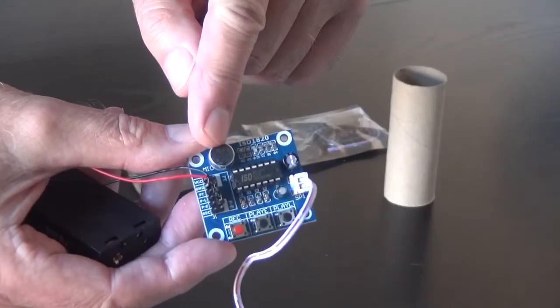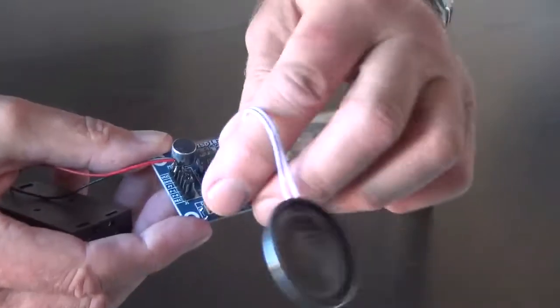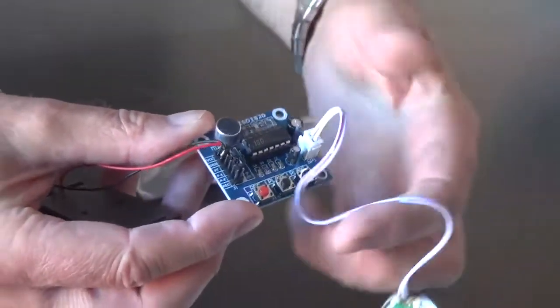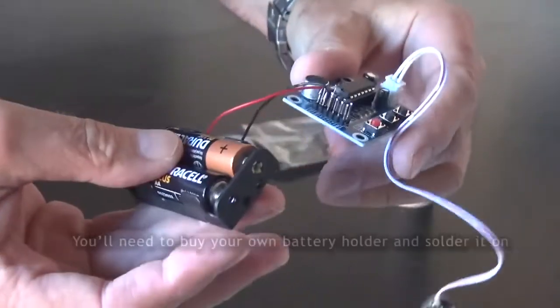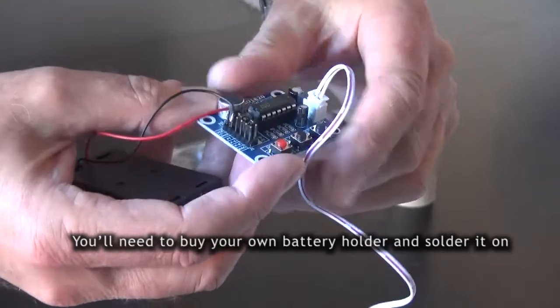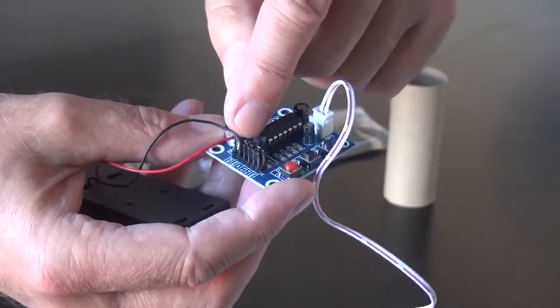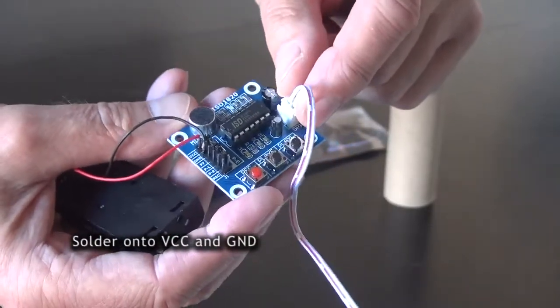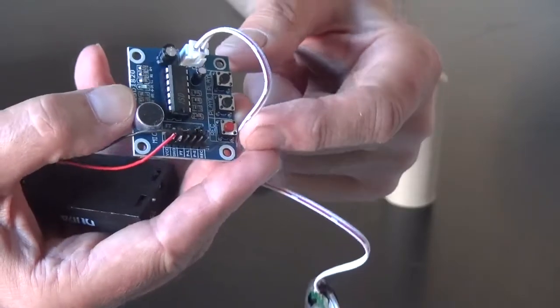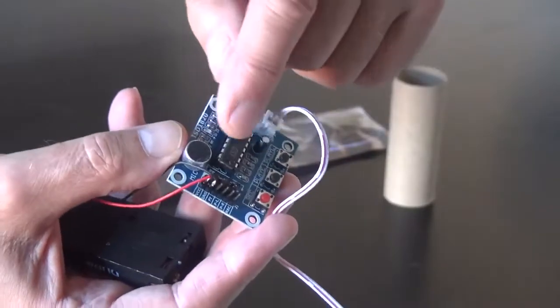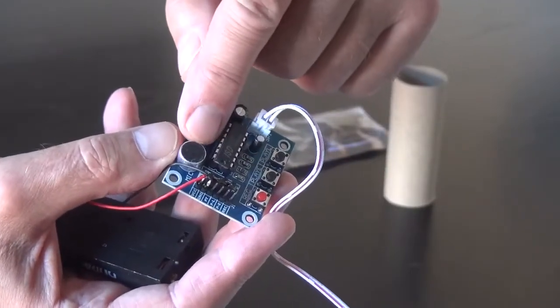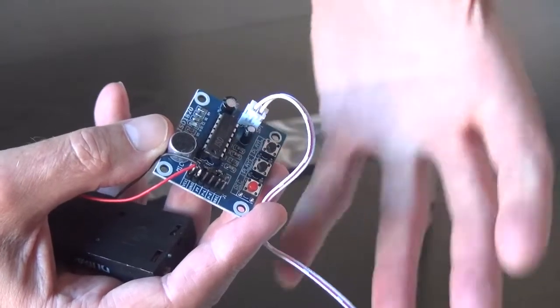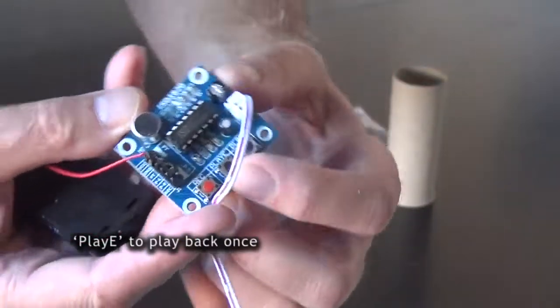It has a recording microphone. When you plug the speaker in and connect it to a 3-volt power supply on VCC and ground, once you press the red record button and speak into the microphone, then release the button, it will record. You play it back using the play button.